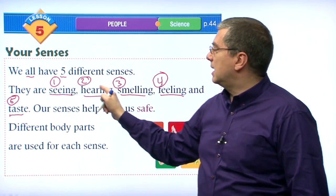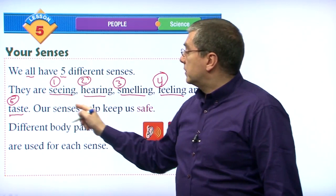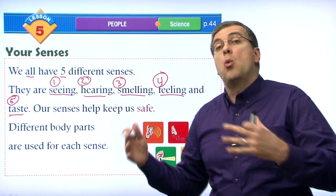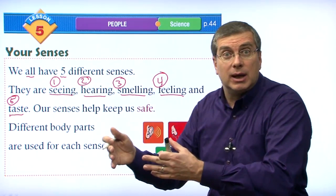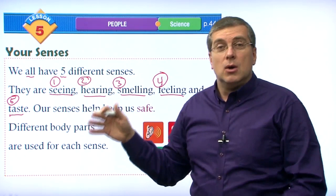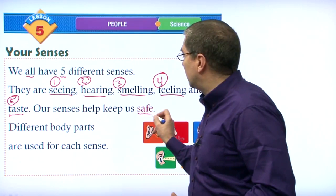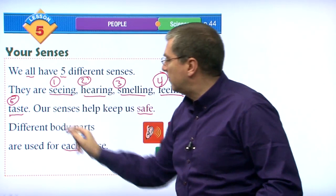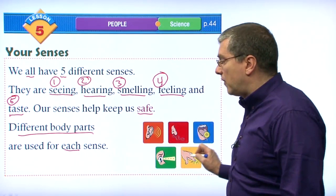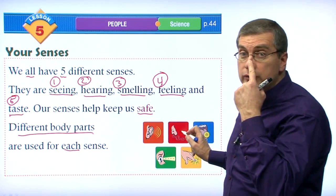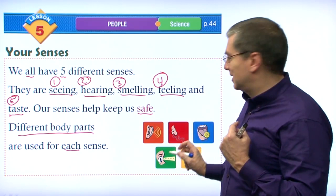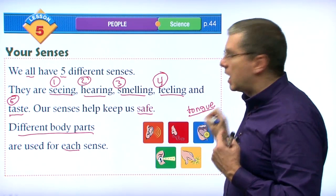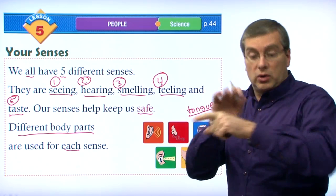Our senses help keep us safe. They keep us away from harm, out of danger. We can see there's a car coming — don't cross the street. We can hear something happening and run away. Different body parts are used for each sense: ear, nose, tongue, eye, and finger or skin.